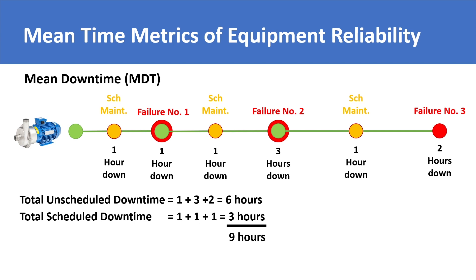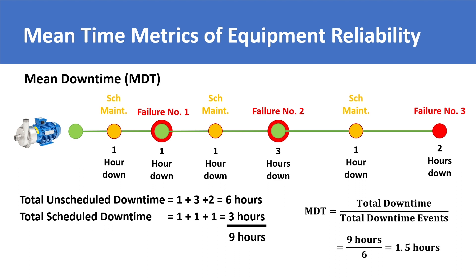Mean downtime is simply the total downtime spread over all downtime events to give you an average. Since downtime is undesirable, the maintenance department should check for reasons of high downtime and take actions to reduce it.